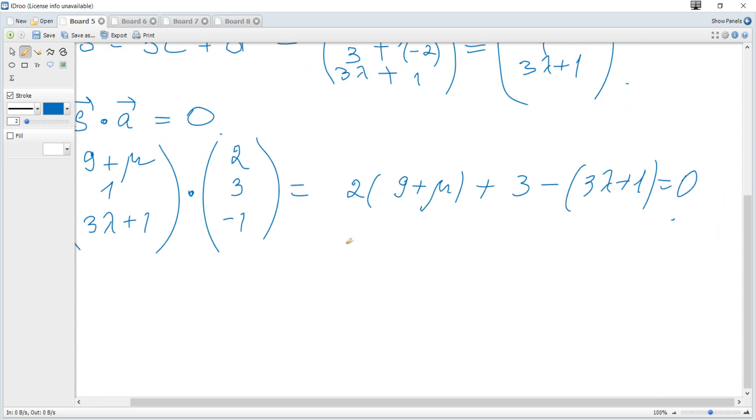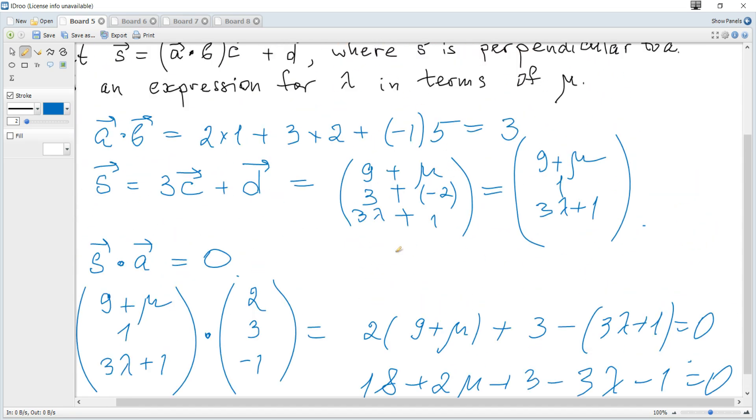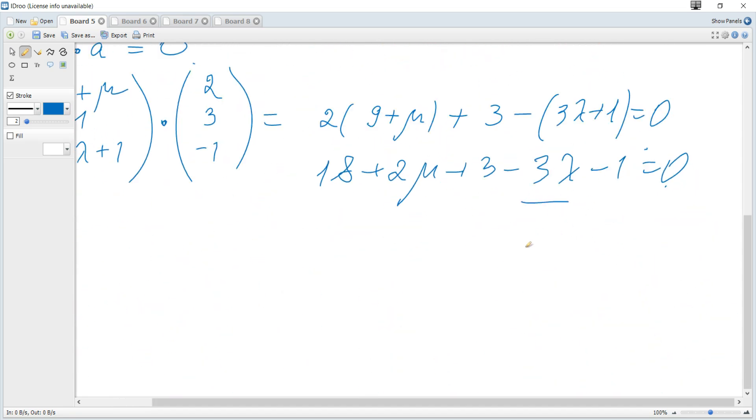Let's expand, and it becomes 18 plus 2 mu plus 3 minus 3 lambda minus 1 is 0. And we need lambda, so we need just solve for lambda.